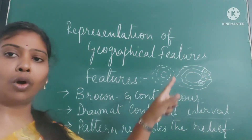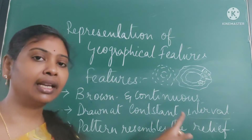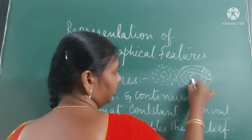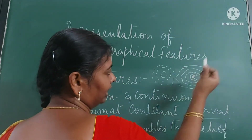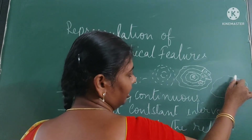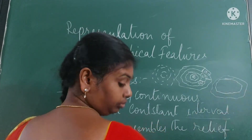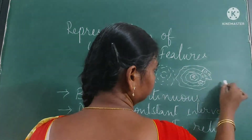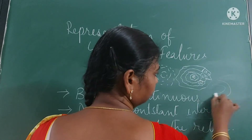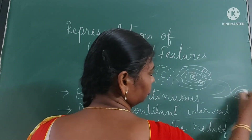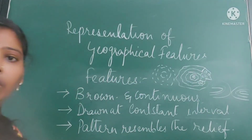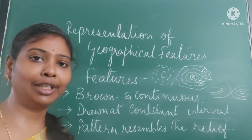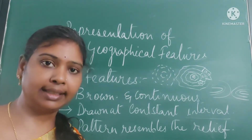The pattern of contours always resembles the relief of the land — that means the landform. For example, the contours resemble a conical hill like this, or they resemble a gap. Each landform will have its own characteristic contour pattern.